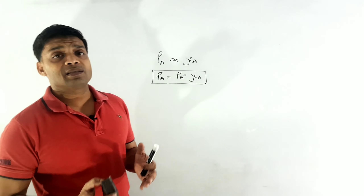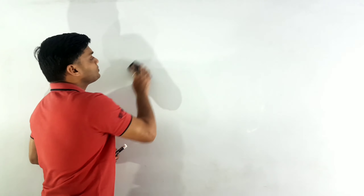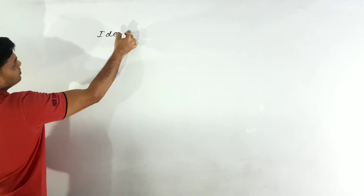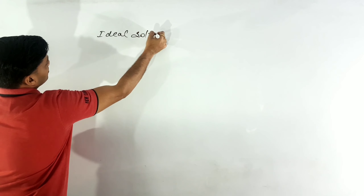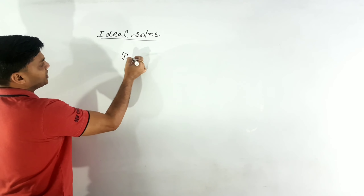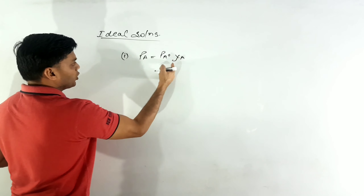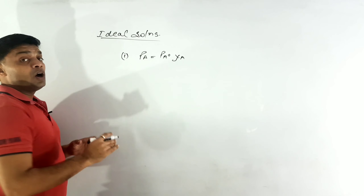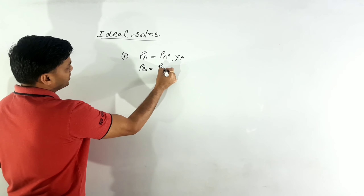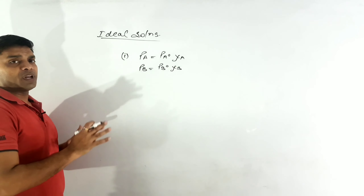Let us discuss the three conditions which need to be followed by an ideal solution. The very first condition is p_A = p_A° · χ_A, meaning Raoult's law must be followed for the solvent, and in case the solute is also volatile, then p_B = p_B° · χ_B as well. So the first condition is that Raoult's law must be followed.